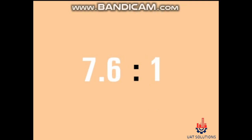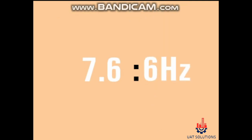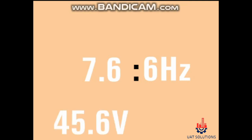As an example, to achieve 10 percent speed, a frequency of 6 hertz must be supplied. To properly apply electric power at 6 hertz, the output voltage must be 45.6 volts AC.